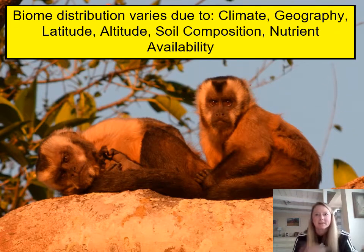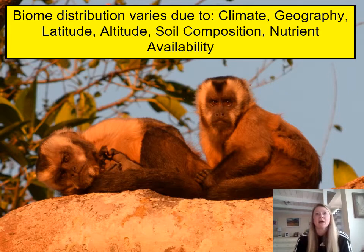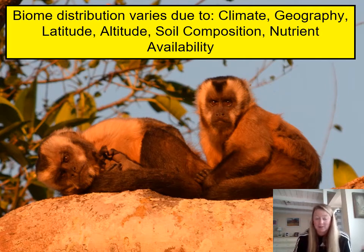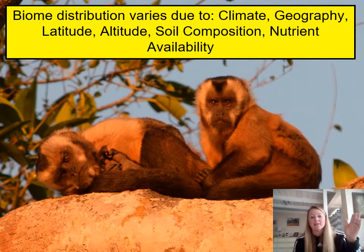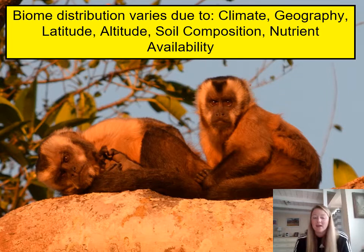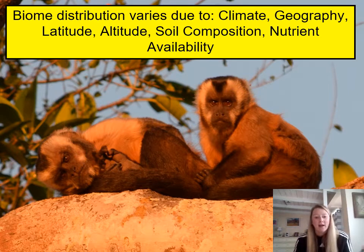Last lecture we talked about biomes and how they are grouped ecosystems working together. But why are there certain biomes in certain areas? There are a lot of different characteristics that determine what biome is where. You have to look at the climate, the geography — where it's placed in the world — the latitude, the altitude, and what the soils are made of and what nutrients can be found in the soils and waters of these biomes.